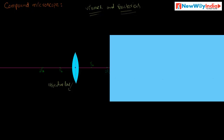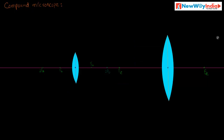The bigger metallic tube consists of another convex lens having a larger focal length. This is called the eye lens. So, in the smaller tube we have the objective lens and in the bigger tube we have the eye lens, which has a larger focal length.